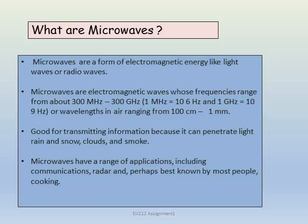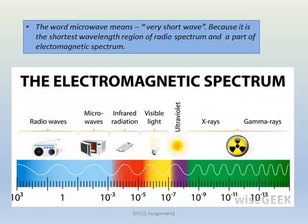Microwaves have a great range of applications including communications, radar, and perhaps best known by most people, cooking. What does the word microwave exactly mean? It means very short waves, because micro means short. It is the shortest wavelength region of the radio spectrum and a part of the electromagnetic spectrum.